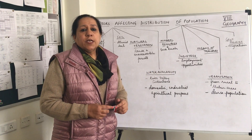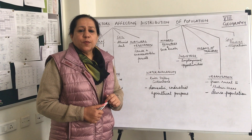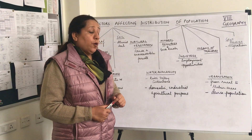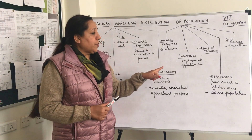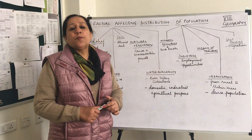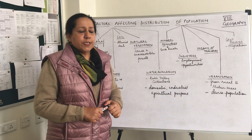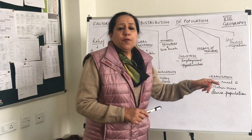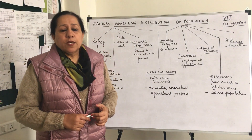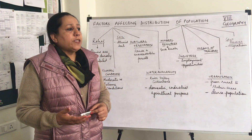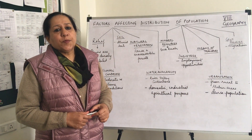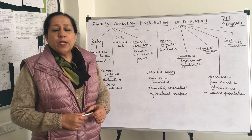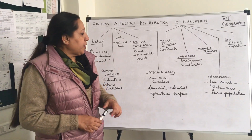Industries. Any area which has a set up of an industrial agglomeration will attract population because of the various employment opportunities which are present there. Means of transport — everybody likes to settle down in an area which is easily accessible, and thus well-developed means of transport will attract a dense population.